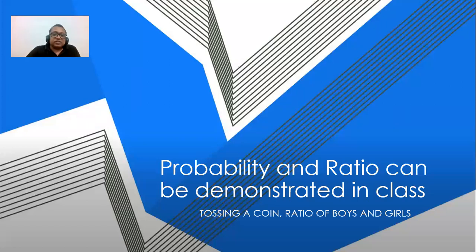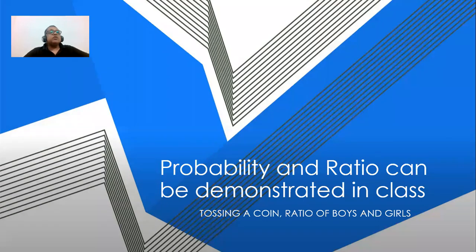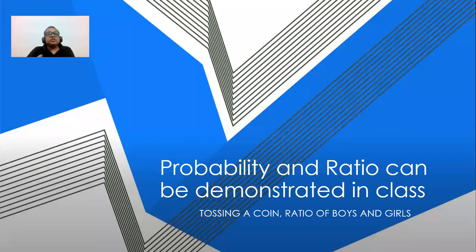Probability and ratio can always be demonstrated in class — just like tossing a coin. When you toss a coin, somebody will say heads, somebody will say tails. Toss it 10 times and record your observations. Or: how many boys are there, how many girls? Find the ratio of boys and girls. How many maths periods do you have in a week? How many English periods? Find the ratio of maths to English. This makes it real — not just a question from the school book.